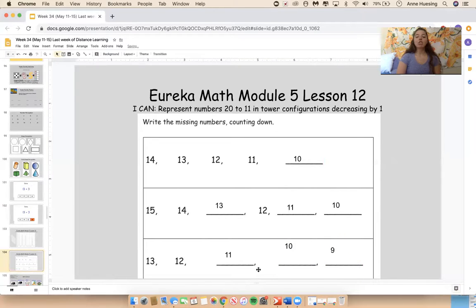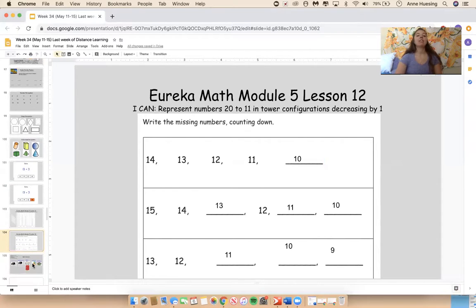All right, welcome back. You should have these numbers on your paper. 13, 12, 11, then 10, then 9 because we're subtracting one or decreasing by one every time.